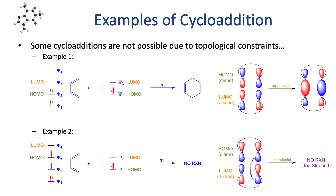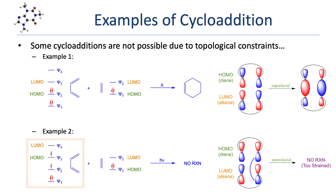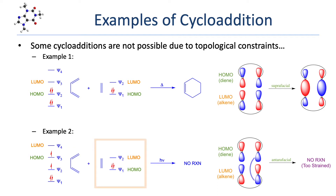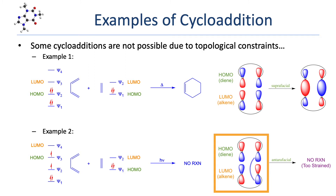In the second example, we again see 1,3-butadiene reacting with ethene, but now under photochemical conditions. Under photochemical conditions, one molecule will be in its most stable excited state. In this case, an electron in the diene has been excited from ψ2 to ψ3, while ethene remains in the ground state. In the diene, ψ3 is now the HOMO, and being an odd-numbered pi molecular orbital, ψ3 is symmetric. In ethene, ψ2 is once again the LUMO and, being an even-numbered pi molecular orbital, is asymmetric. The combination of a symmetric orbital with an asymmetric orbital requires an antarafacial topology. However, a six-atom ring is too constrained to accommodate an antarafacial topology — there simply aren't enough atoms to provide the flexibility needed for a concerted, anti-like addition — so the reaction fails.